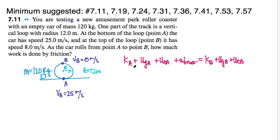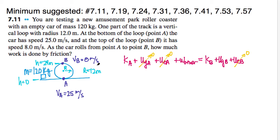I'm going to start with my conservation of energy statement: KA + UGA + UEA + W_other = KB + UGB + UEB. At A, I do have kinetic energy. I can set my height at A to be zero, so H = 0 there. Then I know that B will be at two times the radius in height, so that height is going to be 24 meters.